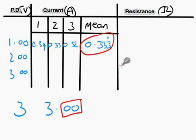And the same goes for the resistance column. So using the formula V equals IR to calculate resistance in this case, R would equal 1 divided by 0.33, which would give a resistance of 3. But it wouldn't just be 3 ohms. It would be 3.00 ohms.